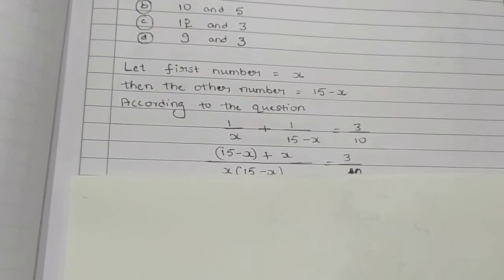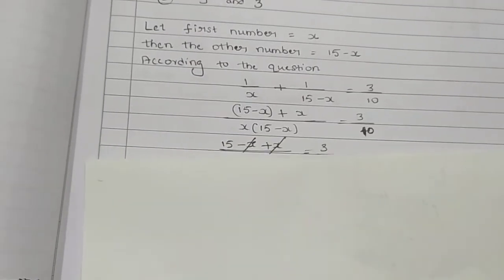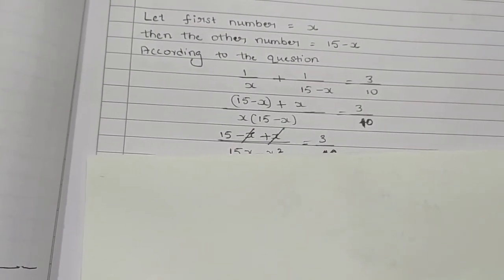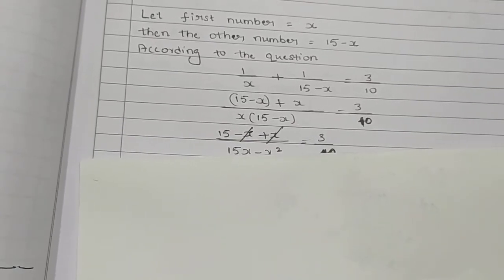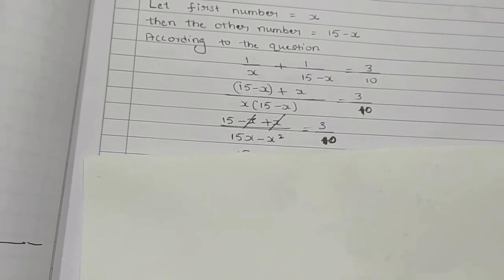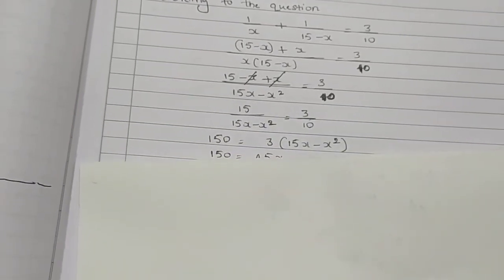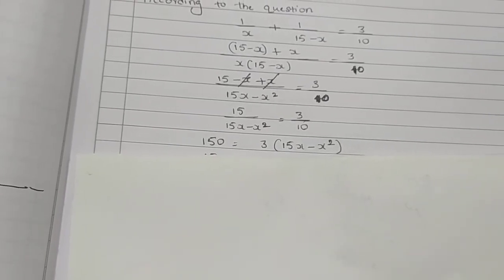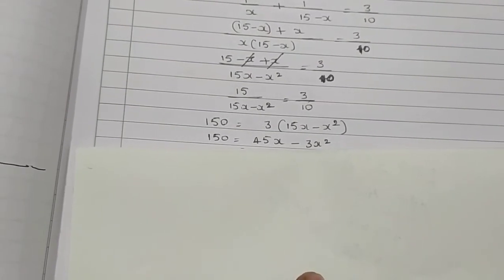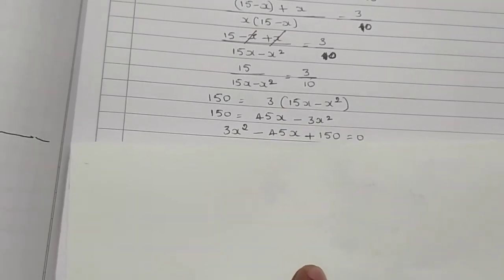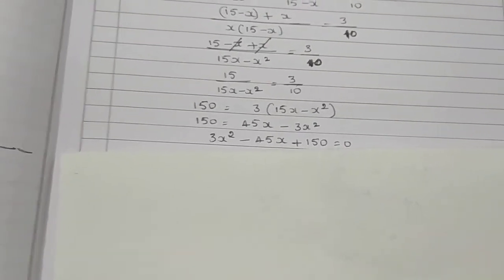Simplifying with the common denominator x into (15 minus x): the numerator becomes 15 minus x plus x, which is 15, over x(15 minus x) equals 3 by 10. So we have 15 over (15x minus x square) equals 3 by 10. Cross multiplying gives 150 equals 3 into (15x minus x square), which leads to 3x square minus 45x plus 150 equals 0. This is in the form of a quadratic equation, so we solve by splitting the middle term.